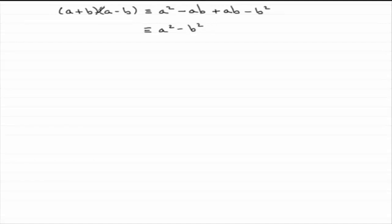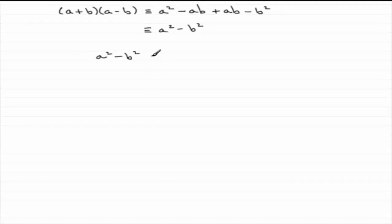So what that leaves us with is just simply a squared minus b squared. Now, whether you multiplied out a plus b with a minus b, or a minus b times a plus b, you'd always get this result, a squared minus b squared. I'll leave it up to you just to check it — a minus b times a plus b — you'll get a squared minus b squared.